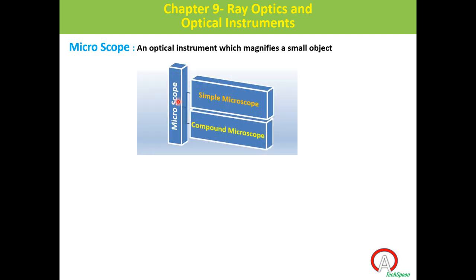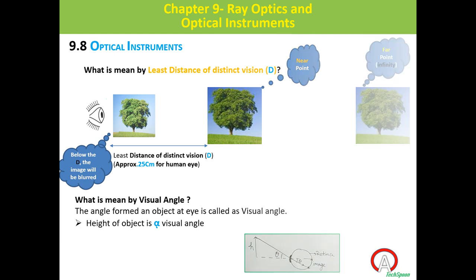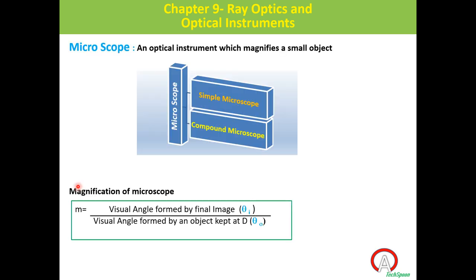Microscopes can be classified into two categories: simple microscope and compound microscope. First we will study simple microscope, then compound microscope. The magnification of a microscope, denoted by small m, is the ratio of the visual angle formed by the final image to the visual angle formed by an object kept at D.